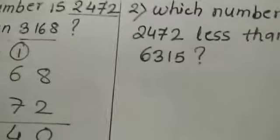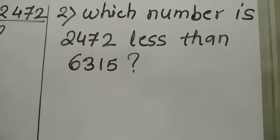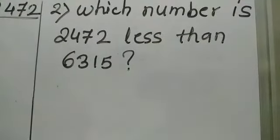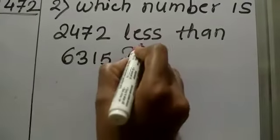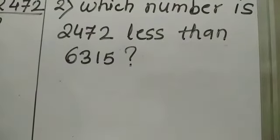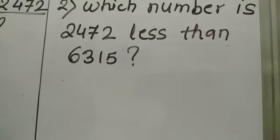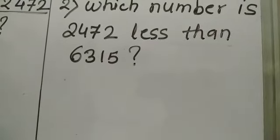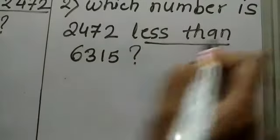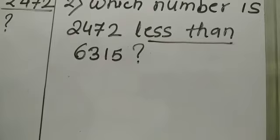Now let's see another example. Which number is 2472 less than 6315? Whenever you see the word 'less than,' it means we have to find out the smaller number. So to find out the smaller number, we always subtract.